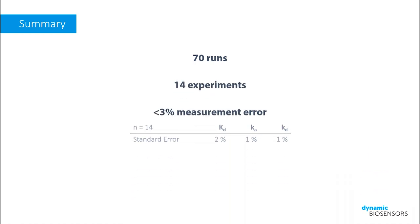So in summary, using the easy-to-follow Helios software, we've completed 70 runs of our model binding system over 14 separate experiments with a standard error of 3% or less across our three kinetic constants, and at a final cost of only €1.30 per data point. Hopefully, you now have a better understanding of how the Helix can help you perform your binding kinetics experiments in a user-friendly, cost-effective and highly reproducible way.